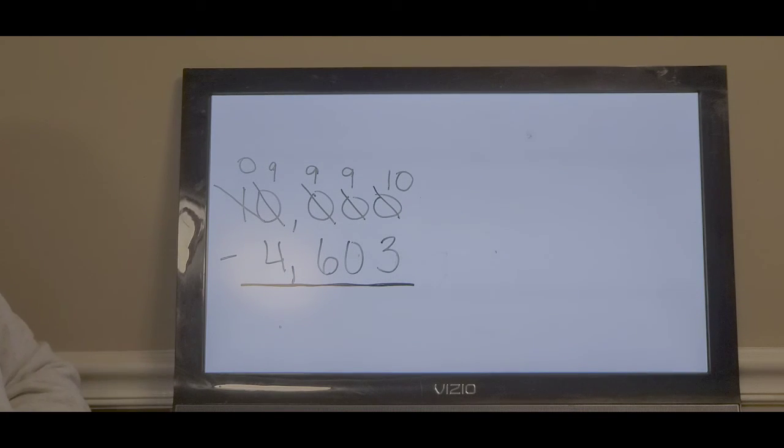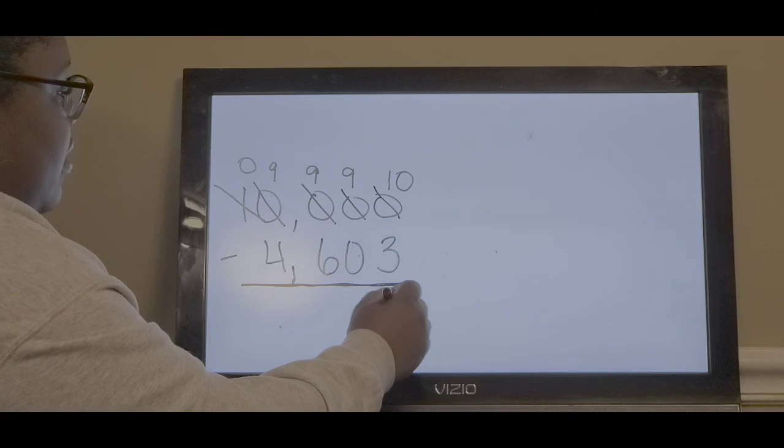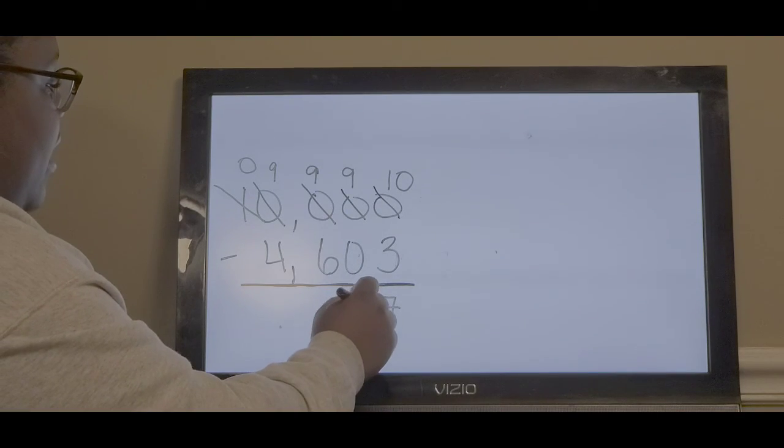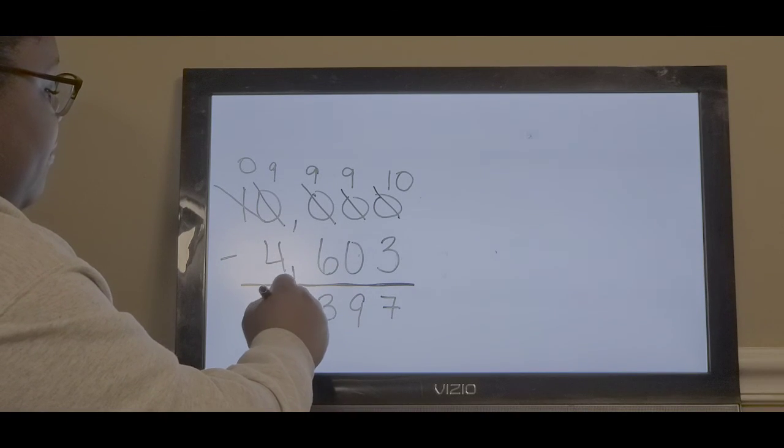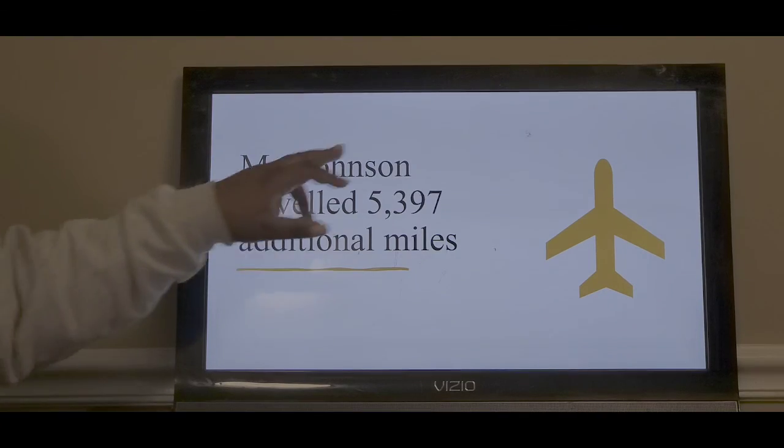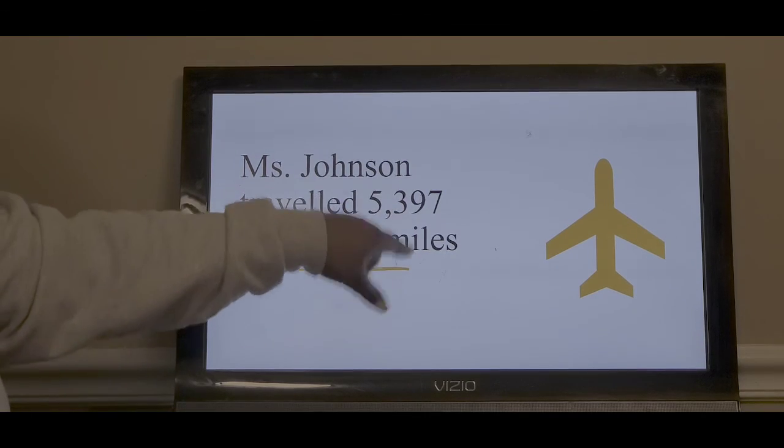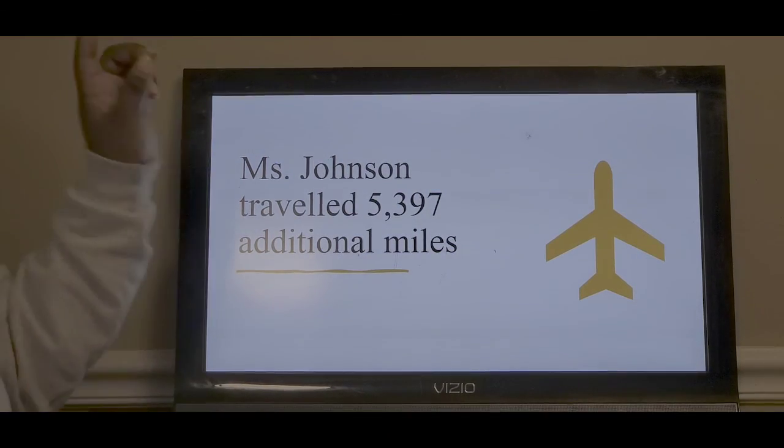Now, 10 minus 3 is 7. 9 minus 0 is 9. 9 minus 6 is 3. 9 minus 4 is 5. Ms. Johnson traveled 5,397 additional miles.